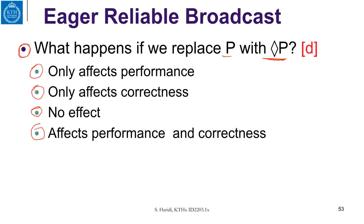To decide on the answer, let us understand the difference between P and ◇P. The difference is that P is accurate while ◇P is eventually accurate. There are two ways to answer these questions: one is to look at the behavior of the algorithm, and the other is to look at the proof. Let us do the more disciplined way, which is to look at the proof.